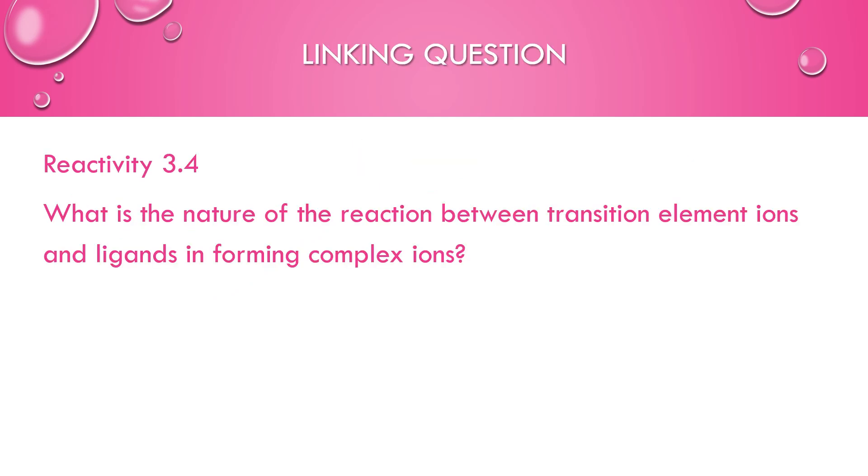This information about complex ions links to reactivity 3.4. What is the nature of the reaction between transition element ions and ligands? Transition element ions are positively charged, like positive oxidation states. And they act as Lewis acids. The ligands typically have lone pairs or maybe even a negative charge. And they will act as Lewis bases. And so this is an acid-base type reaction, Lewis acids and Lewis bases, where the Lewis bases are donating electrons. The Lewis acids are accepting the electrons in the formation of these complex ions.